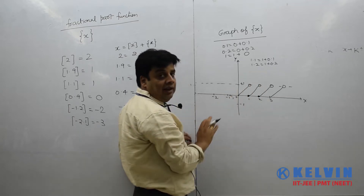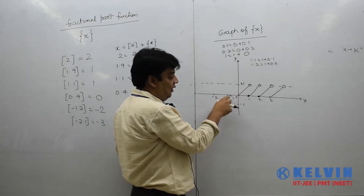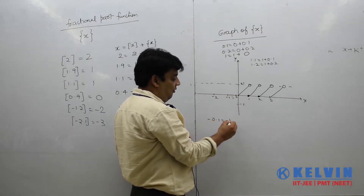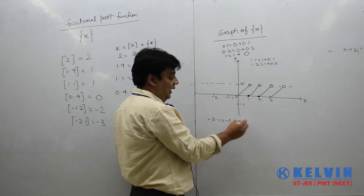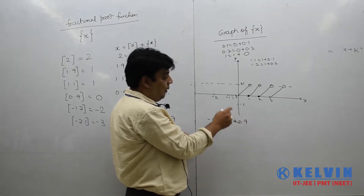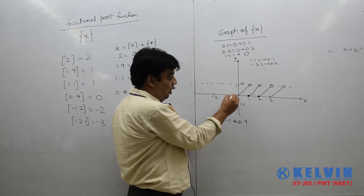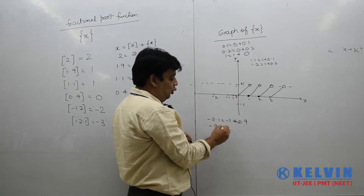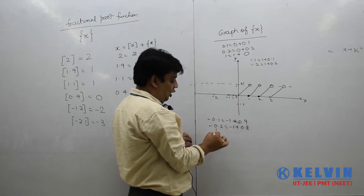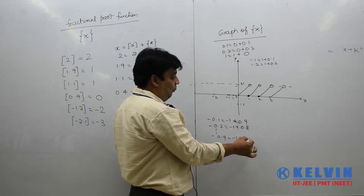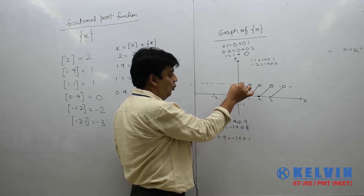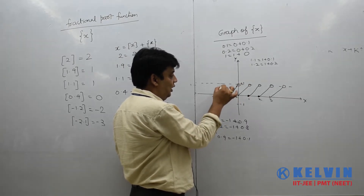Now on the negative side: at minus 0.1, the fractional part is 0.9, because the greatest integer of minus 0.1 is minus 1, so minus 0.1 = minus 1 plus 0.9. At minus 0.2, the fractional part is 0.8. At minus 0.9, the fractional part is 0.1. The same line pattern appears here. At 0, there is an open bracket, and the graph follows the same diagonal shape on the negative side.